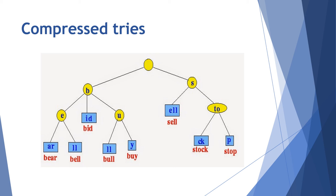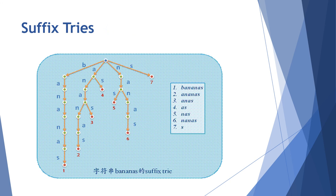Next is suffix tries. For a word, a tree is constructed from prefix to suffix; every node contains only single elements. Taking the word bananas: every letter is added to the tree, then B is removed, giving ananas; next is anas, then as, then nas, then nanas, and finally s. So from bananas down to the suffix, the tree is constructed — this is suffix tries.